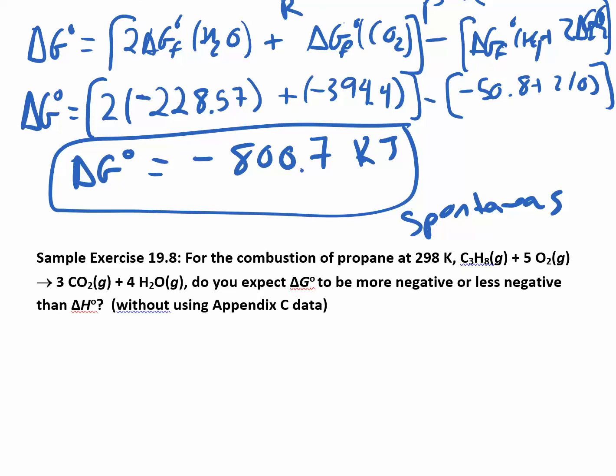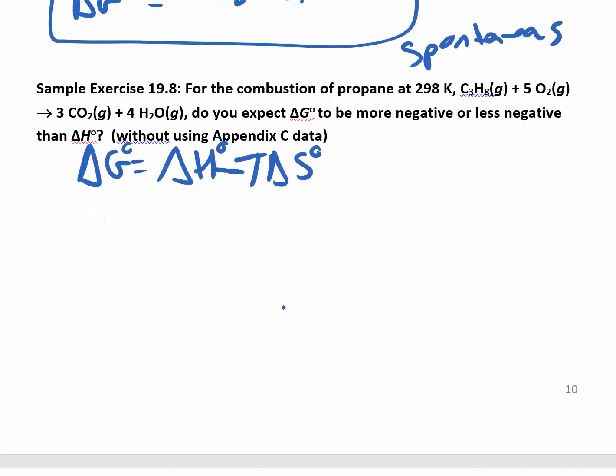So this next problem also looks at the equation using delta G is delta H minus T delta S. Everything's under standard conditions. But we're not actually going to use numbers this time. We're going to kind of rationalize this and look at it more conceptually. So combustion, the combustion of propane looks like this. Do you expect the delta G naught to be more negative or less negative than delta H? And they don't want to use any numbers here. They just want you to think through it. So what do we know about combustion reactions in the sign of delta H? Delta H is going to be negative, right? It's always exothermic. Whenever you have a combustion reaction, it's going to be exothermic.